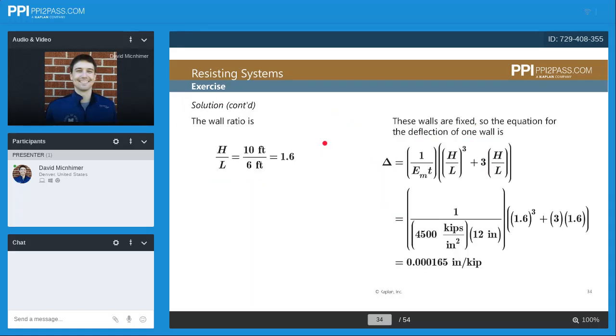The wall ratio is H over L, or 10 feet over 6 feet, and we end up with 1.6. So you can see that we can just plug it into the equation for a fixed-fixed wall. We plug in 1.6 and 1.6. We're told that the modulus of elasticity was 4,500 KSI, and the thickness was 12 inches. Make sure that your units cancel out here as well. They could give you the thickness in feet, so you may have to multiply by a conversion factor.